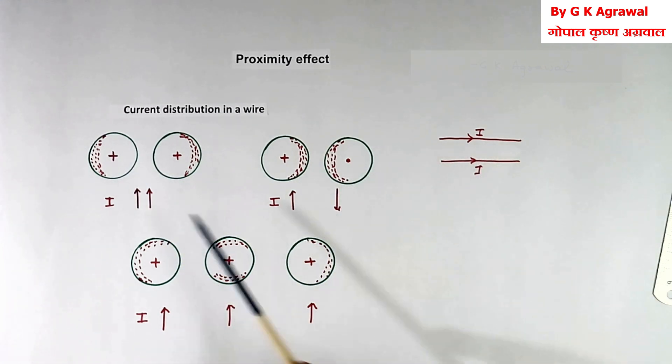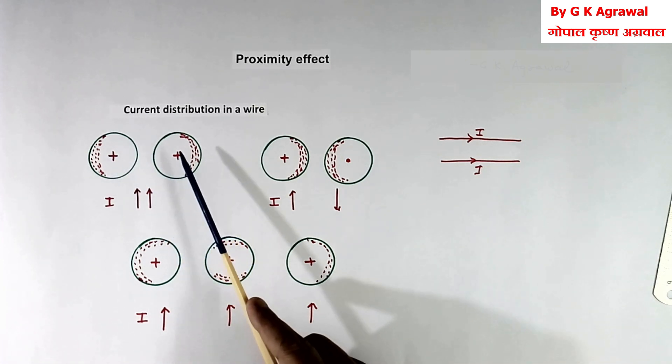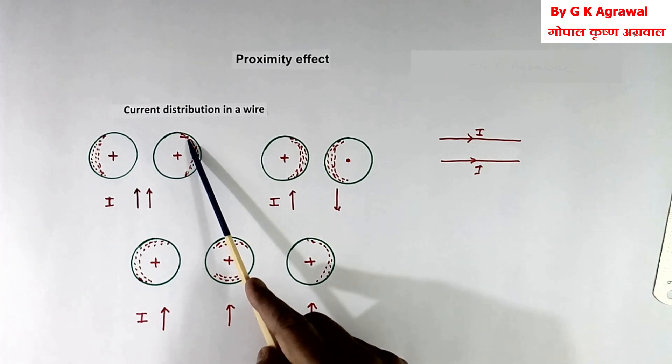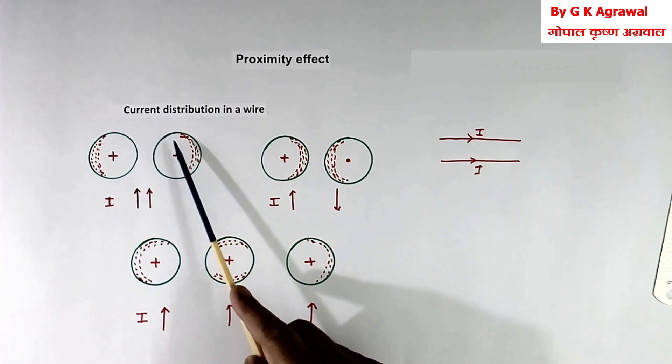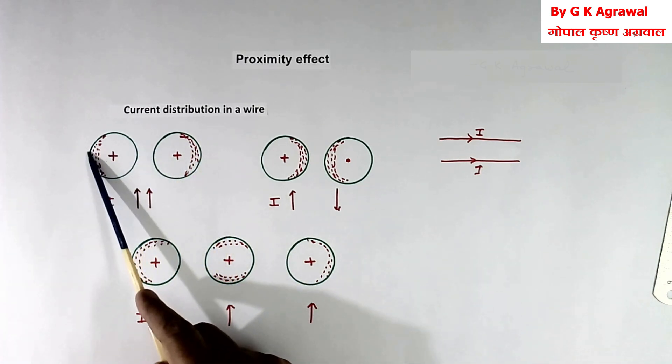So when in two wire current flows in the same direction, then current will not flow in full area but will in less area, but away from each other. This current and this current are away from each other.